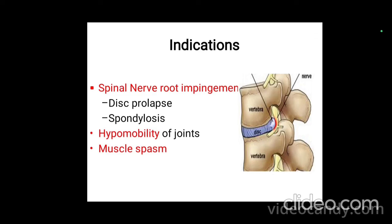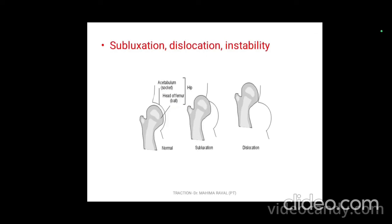Now moving towards the contraindications — conditions in which traction is contraindicated. These include acute strain, sprain, and inflammation; spinal hypermobility; malignancy; infection; and osteoporosis. The last contraindications are subluxation, dislocation, and joint instability. As shown in the figure, normal articulation differs from subluxation (partial contact) and full dislocation. If the joint is unstable, hypermobile, or has malignancy or infection, traction is contraindicated.